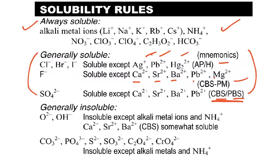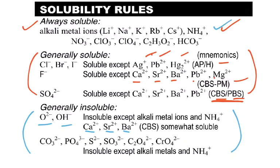For generally insoluble compounds: oxides and hydroxides are usually precipitates, but they will be somewhat soluble if paired with calcium, barium, strontium, and the ones that are always soluble. So oxides and hydroxides usually have very low solubility, except with calcium, barium, strontium, and the alkali metals and ammonium.